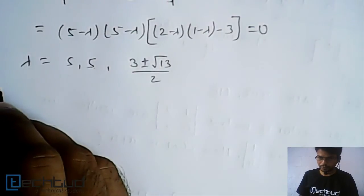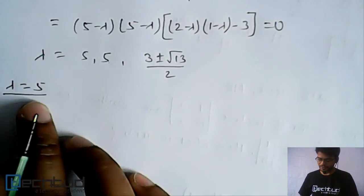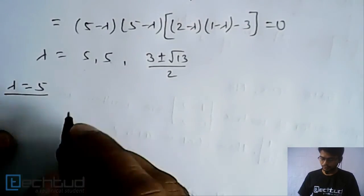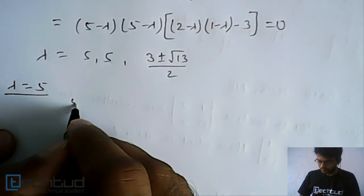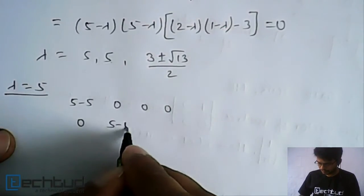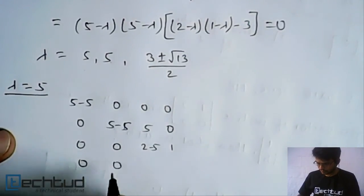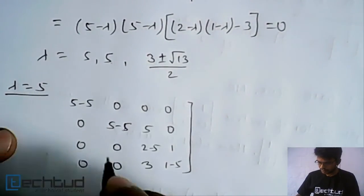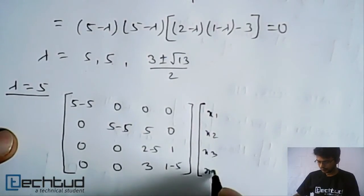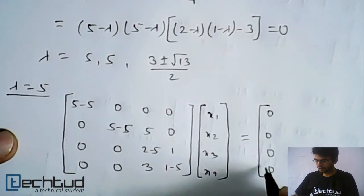Now let's put lambda equal to 5 and find out an eigenvector. Once we substitute this value, the matrix becomes: row 1 is all zeros; row 2 is 0, 0, 5, 0; row 3 is 0, 0, minus 3, 1; row 4 is 0, 0, 3, minus 4. We multiply this with x1, x2, x3, x4, equal to 0.